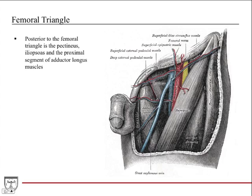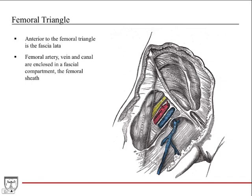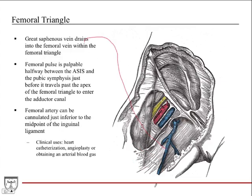Posterior to the femoral triangle is the pectineus muscle. Anterior to the femoral triangle is the fascia lata — in a cadaver you'd have to cut through the fascia lata to get to these vessels. The femoral artery, vein, and canal are enclosed in a fascial compartment called the femoral sheath, where each structure is encased in its own little fascial compartment.